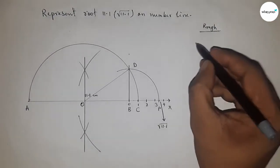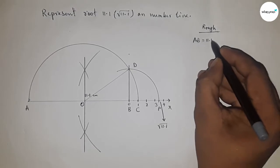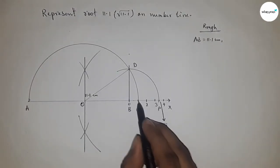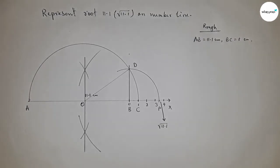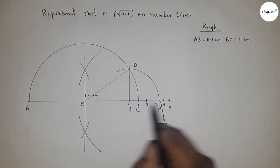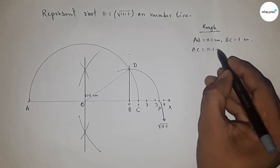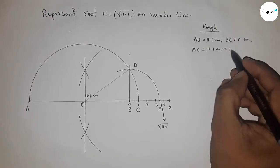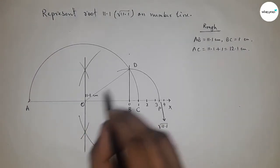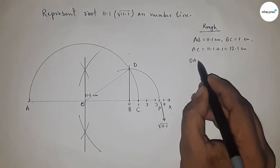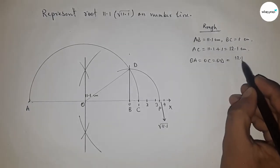Given: AB equals 11.1 centimeters and BC equals 1 centimeter. So AC equals 11.1 plus 1, which equals 12.1 centimeters. The radius OA, OC, and OD each equal 12.1 divided by 2 centimeters.